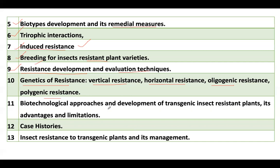Coming to the biotechnological approach and development of transgenic insect-resistant plants, their advantages and limitations — you need to completely study the biotechnological approach to transgenic plant development. This includes recombinant DNA techniques, the steps involved, advantages and limitations, and which crops have been accepted by the Government of India.